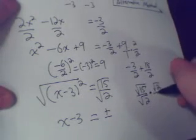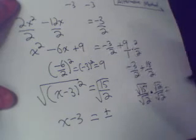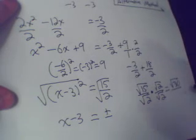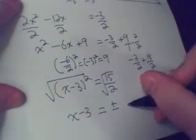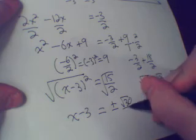Multiply by √2 / √2. And you get √30 / √4. The square root of 4 is 2. So you get √30 / 2.